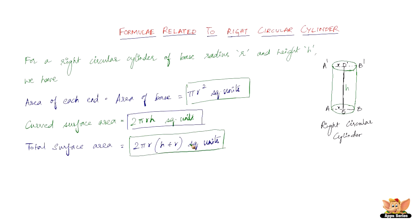Next is the volume of a right circular cylinder — how much it can hold. The volume is given by the area of the circular base multiplied by the height, which is nothing but πR²H cubic units.